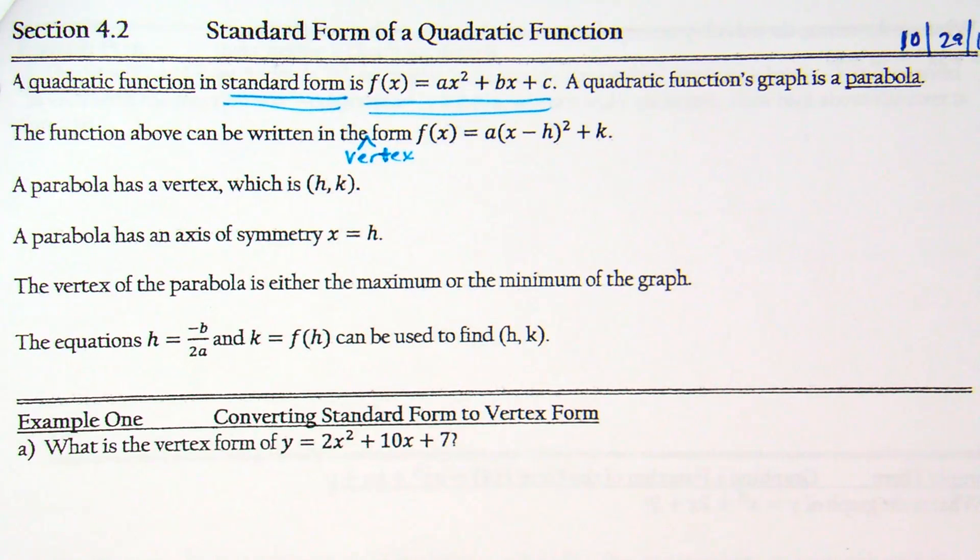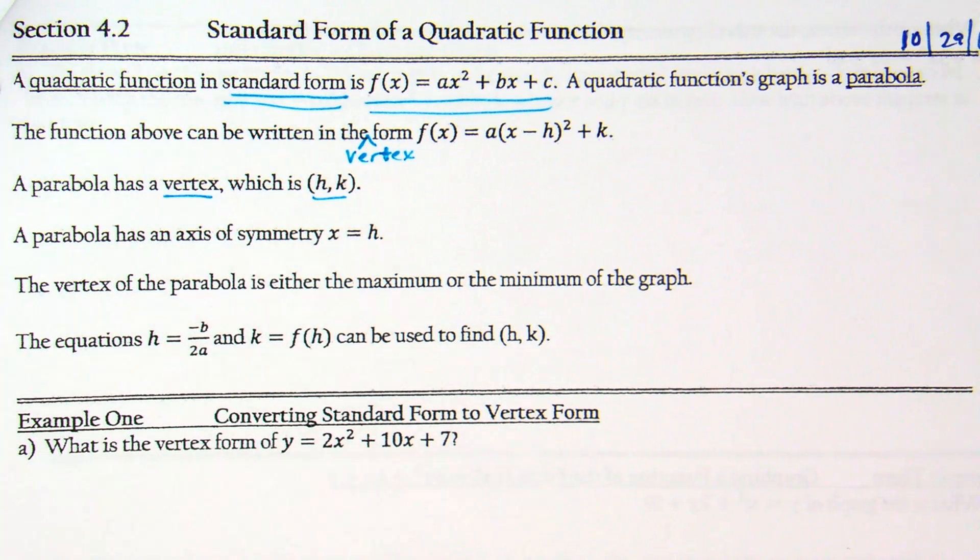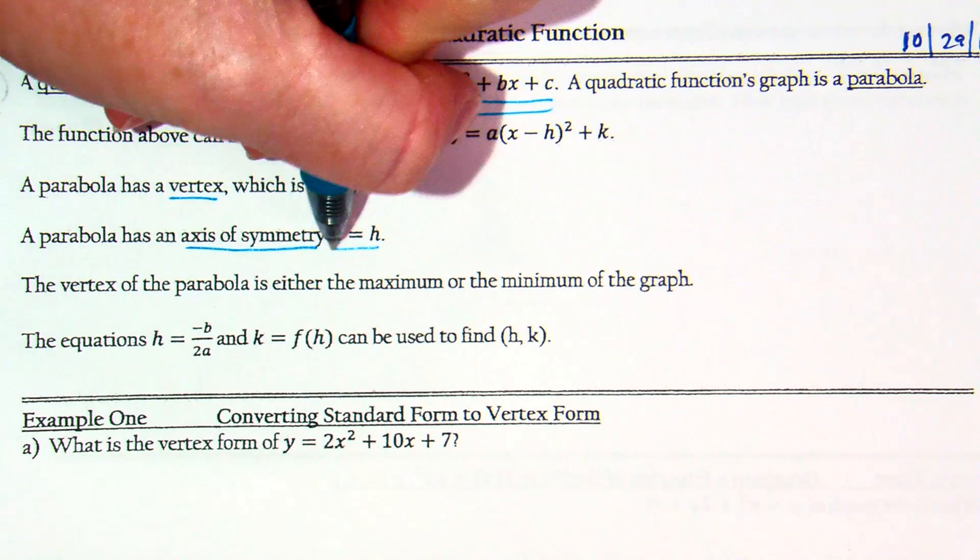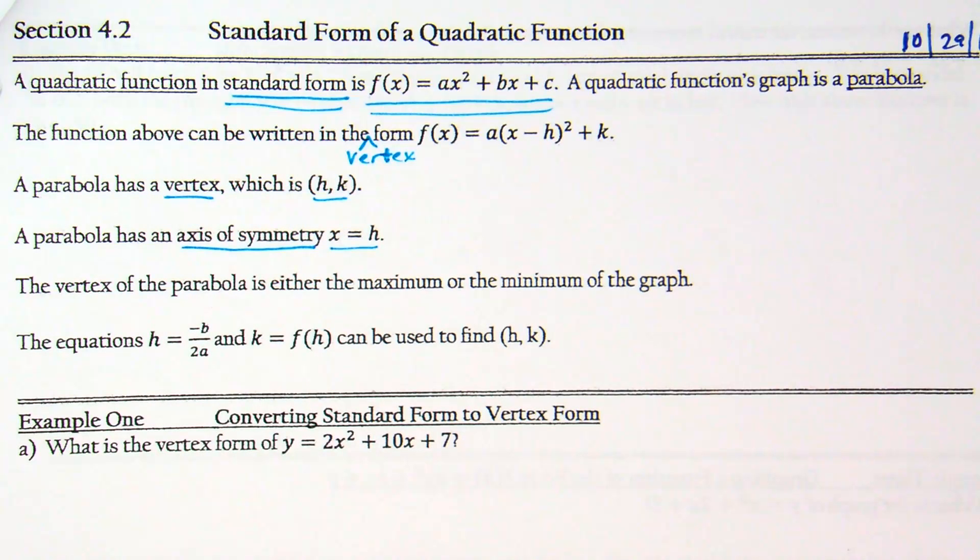Review. A parabola has a vertex, and that vertex is at h, k. We've also already talked about axis of symmetry. That axis of symmetry goes through the middle of the parabola, and it's x equals h. The vertex of the parabola, it's either the max or the min.